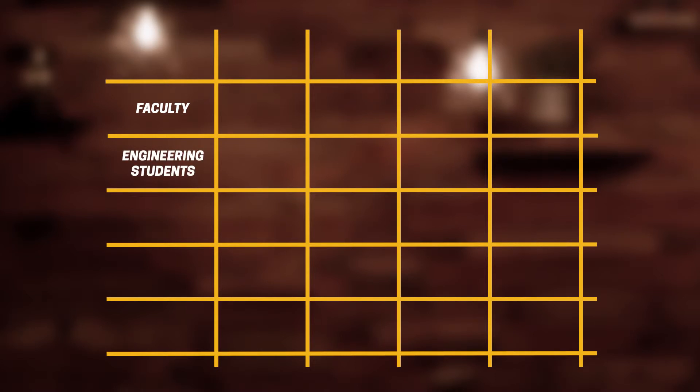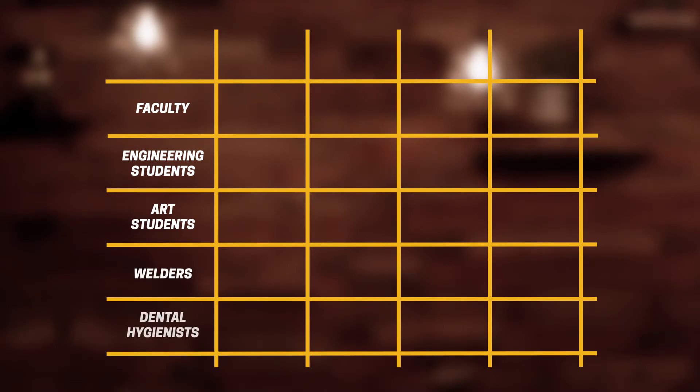Let's try an exercise in associative thinking. Associative thinking is where you take two ideas and combine them, just to focus the possibilities around those two ideas. We'll create a matrix. On the left-hand side, we'll focus on creating groups of individuals — for example, faculty as one group, engineering students as another, art students as a third. The more specific the groups, perhaps the better. Let's be very specific: let's pick welders and dental hygienists.